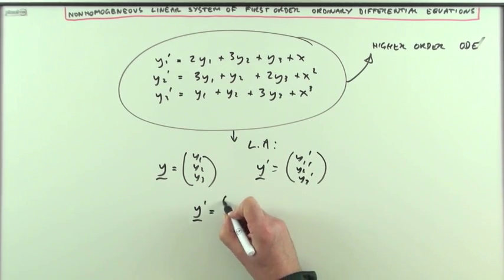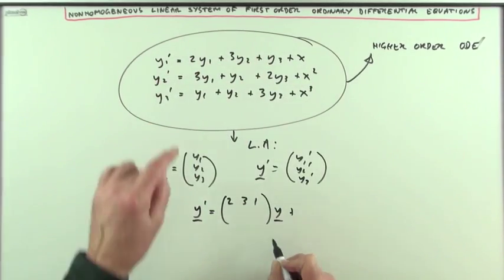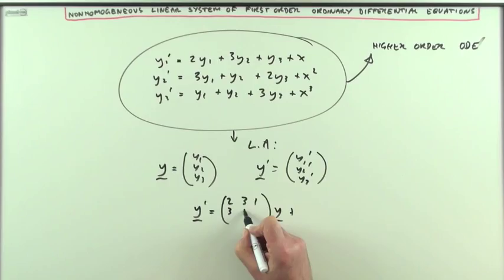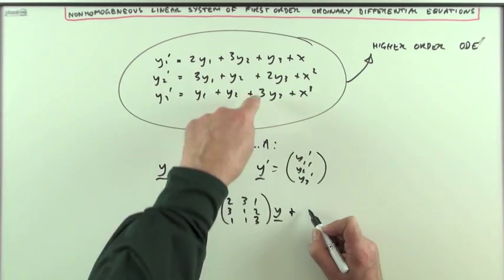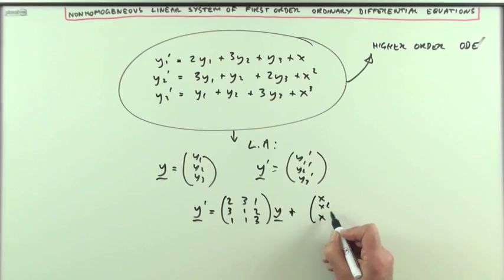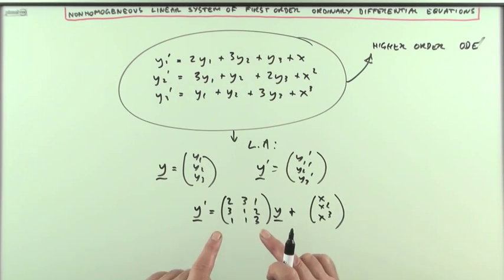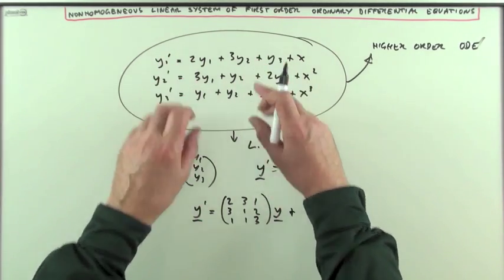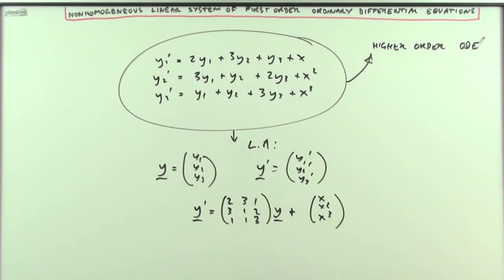Y dashed would be 2, 3, 1, 3, 1, 2, 1, 1, 3—this 3 by 3 matrix times Y plus this vector of X at the end: X, X squared, X cubed. I've got this system in terms of that matrix. If you were to diagonalize that matrix you could disentangle them, you could decouple the equations and that's the technique here.